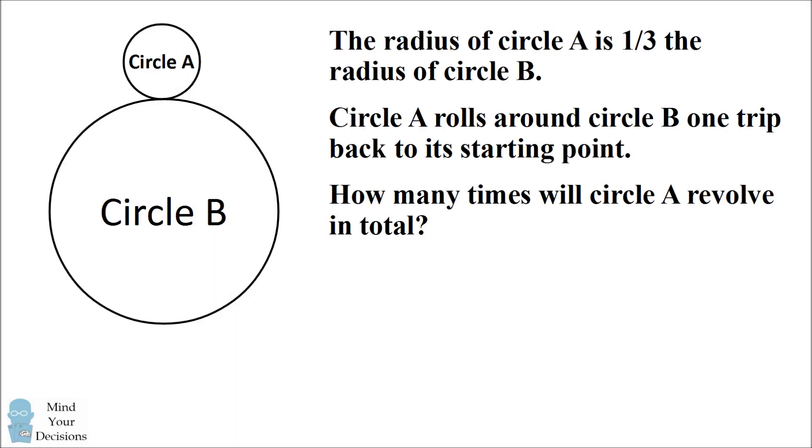In the following figure, circle A has one-third the radius of circle B. Circle A rolls around circle B one trip back to its starting point. How many times will circle A revolve in total?